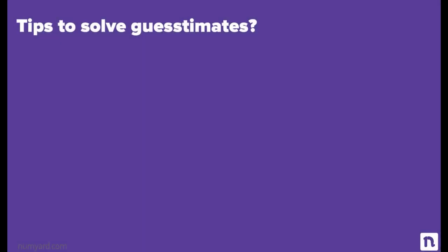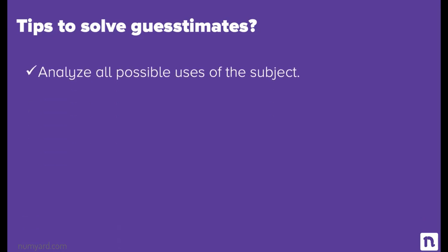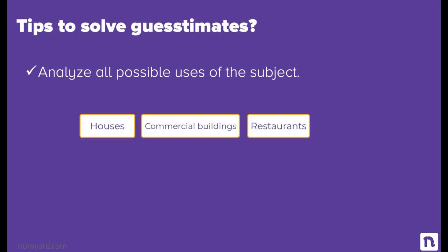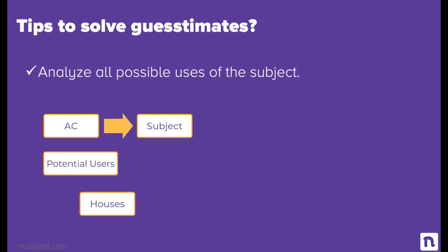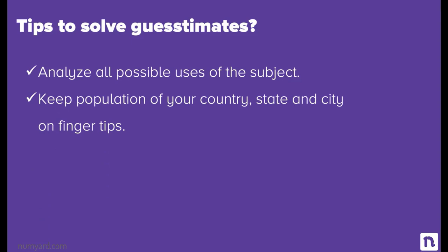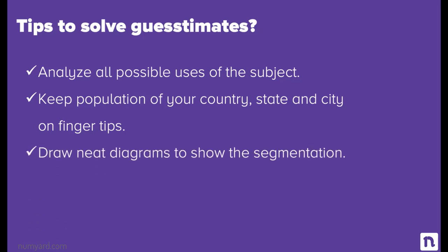Tips to solve guestimates: first, analyze all possible uses of the subject. For example, when estimating ACs in a city, consider ACs in houses, commercial buildings, restaurants, vehicles, and all other potential users. Second, keep the population of your country, state, and city on your fingertips, as population is the most common proxy for many case studies and gives you a good starting point. Third, draw tree diagrams to show segmentation — this helps calculate quickly and makes it easier to redo calculations at the segment level if your approach needs revision.